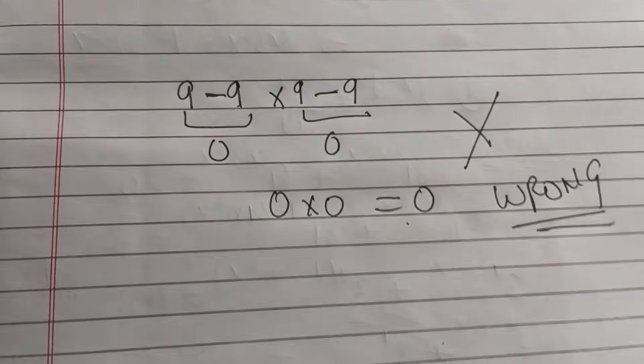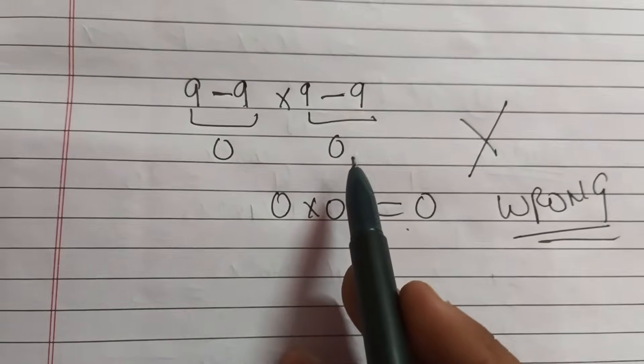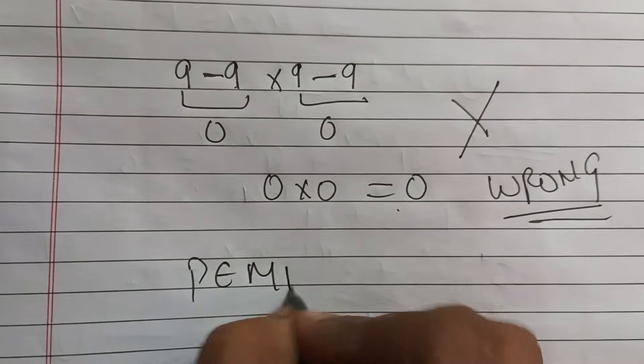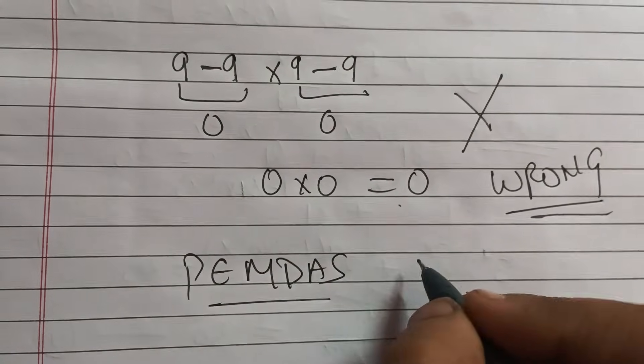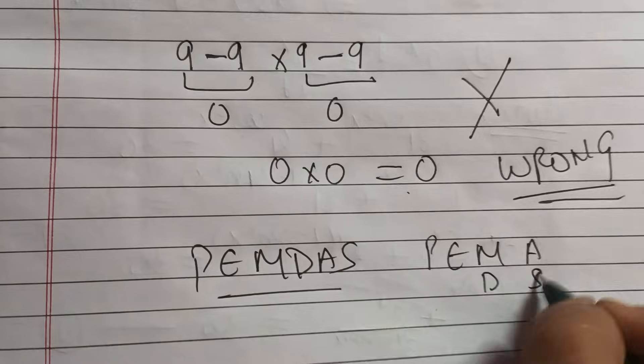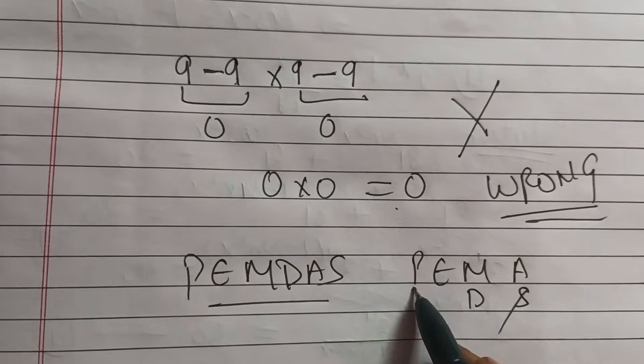Why wrong? Because in this type of questions, we have to follow a rule which is called PEMDAS. PEMDAS, where multiplication and division has same order.